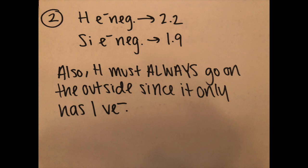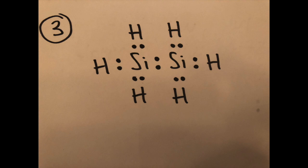So step two we have to compare the electronegativities. I wrote down electronegativities for both of them and so in this case we don't really even need to look at them though because hydrogen has to be on the outside because it only has that one valence electron. Also it just happens to be that silicon has the lower electronegativity value anyways and so it would be on the inside regardless.